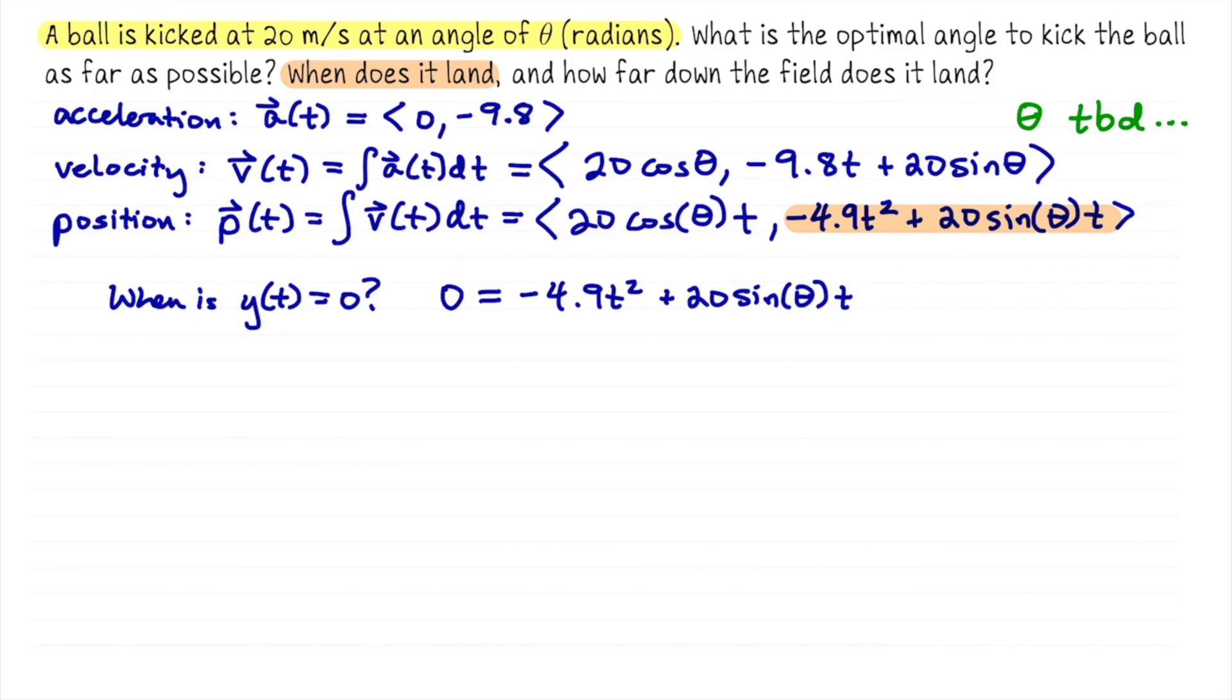This is a degree 2 polynomial. If that initial height had not been 0, but say plus 1 or something like that, you would probably want to use the quadratic formula. In this situation though, I can factor t in front, I only have two terms, to write t times negative 4.9t plus 20 sine of theta. This product is 0 when either factor is 0. The first factor is just t, but t equals 0 corresponds to the moment we kick the ball. So it's in the second component that will give us the information about t. So now we set that equal to 0.